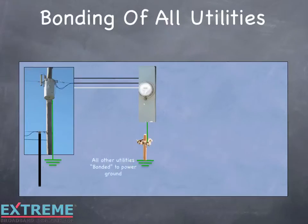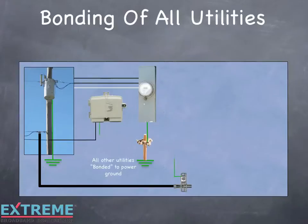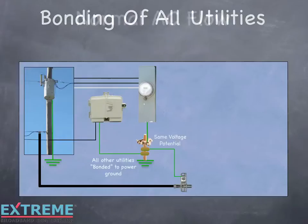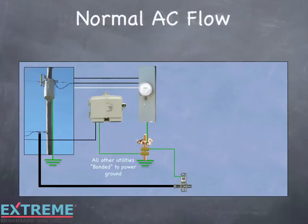All other utilities, such as cable and phone, bond to the power ground using their own separate attachment to the power ground. The outer shield of the coaxial cable is now bonded to the power ground through the bonding block and is at the same voltage potential. Bonding keeps all the utilities at the same voltage potential as power. The power meter is connected to the circuit breaker panel, which establishes individual power circuits within the home.